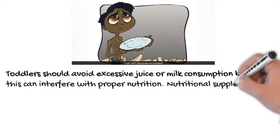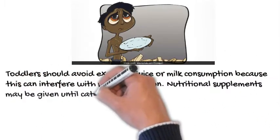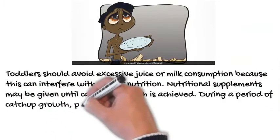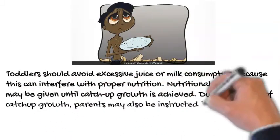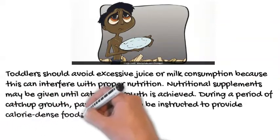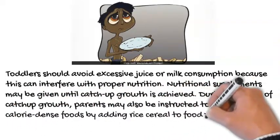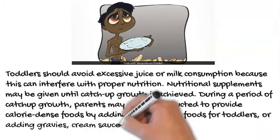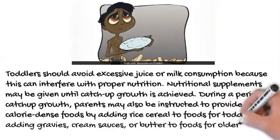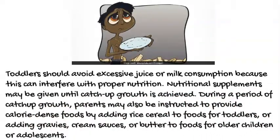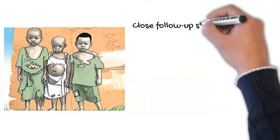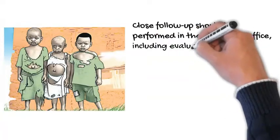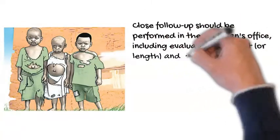Toddlers should avoid excessive juice or milk consumption, as this can interfere with proper nutrition. Nutritional supplements may be given until catch-up growth is achieved. During a period of catch-up growth, parents may also be instructed to provide calorie-dense foods by adding rice cereal to foods for toddlers, or adding gravies, cream sauces, or butter to foods for older children or adolescents. Close follow-up should be performed in the physician's office, including evaluation of height, or length, and weight.